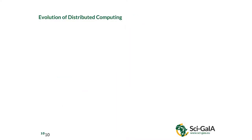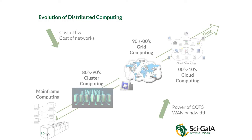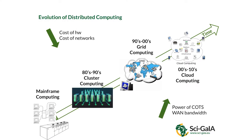If we look at scientific computing in the last 30 years, we evolved from centralized scientific computing with big computers in the basements of departments to decentralized computing. We moved from cluster computing in the 80s and 90s, to grid computing at the end of last century, and now we are moving to cloud computing. This was possible due to the reduction in hardware and network costs, and increased computer power and bandwidth.